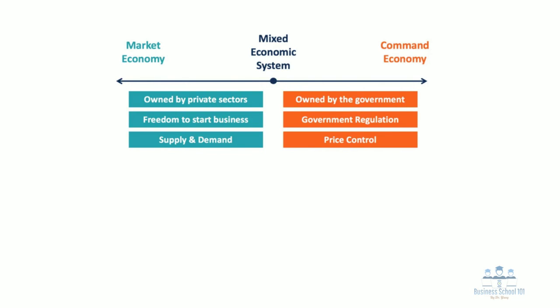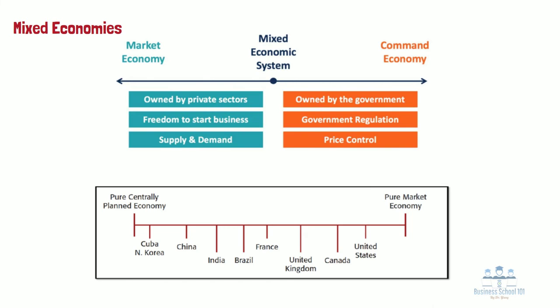As we have learned, both market and command economies have distinct advantages and disadvantages. However, in the real world, it's quite difficult to find either a pure market economy or a pure command economy — almost all economic systems are blended to some extent, combining elements of both. These are referred to as mixed economies. The US, Canada, and the UK are positioned towards the market-oriented end. China has gotten closer to a market-oriented system in recent years, but remains more of a command economy because state-owned enterprises continue to play a critical role. North Korea and Cuba are currently the countries closest to the pure command economy end of the spectrum.